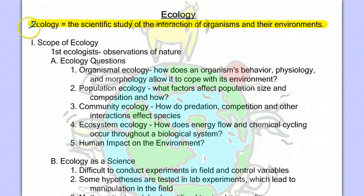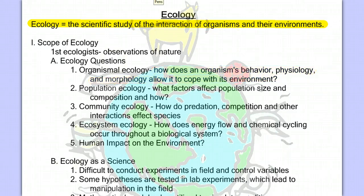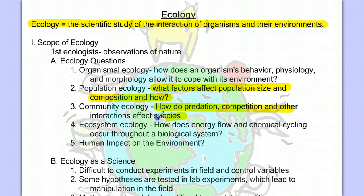The major questions that ecology tries to address are varied and include, from organismal ecology, how does an organism's behavior, physiology, and morphology allow it to cope with its environment? From population ecology, we ask what factors affect a population's size and composition and how? From community ecology, we get questions like how do predation, competition, and other interactions affect species?